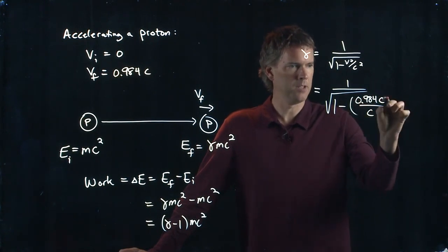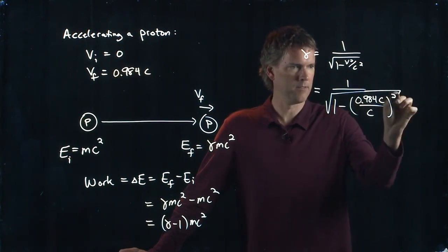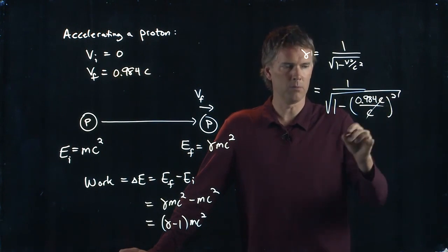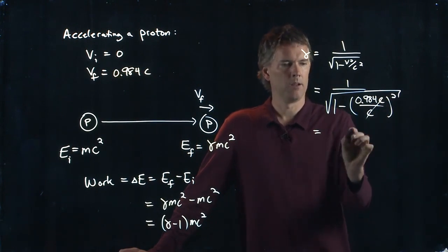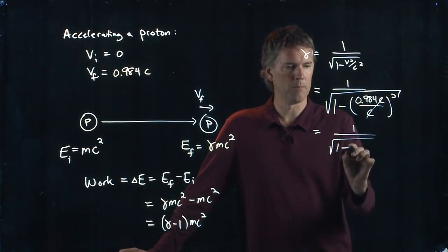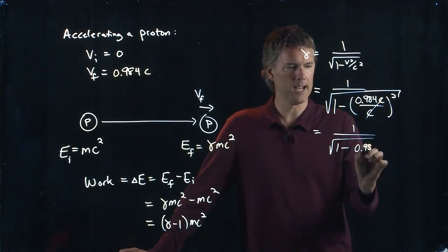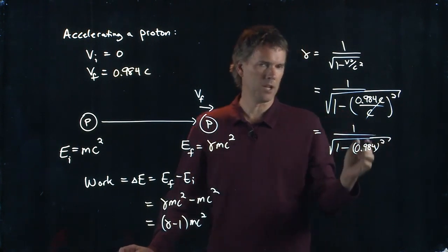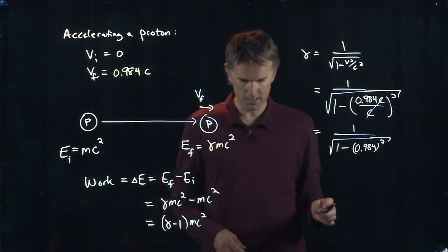We have 0.984C. We're going to divide by C and square that stuff. Therefore, the C's will cancel out. We get 1 over the square root, 1 minus 0.984 squared. And why don't you guys punch that into your calculator and tell me what you get?